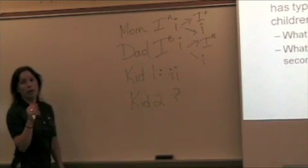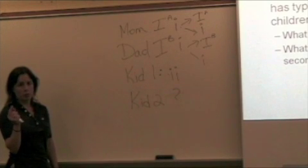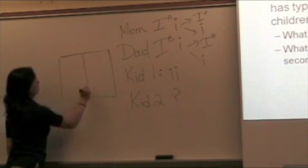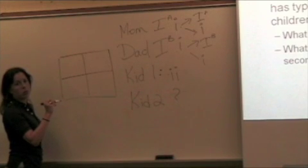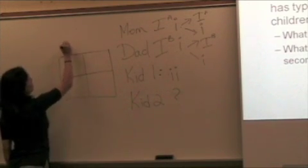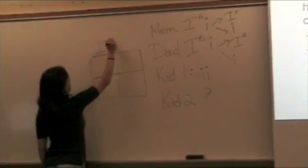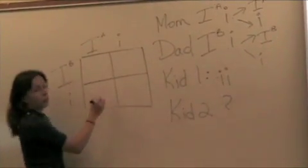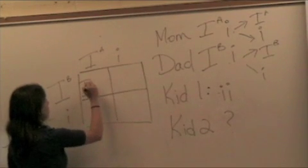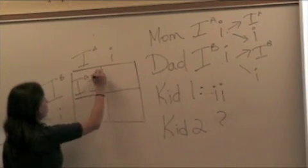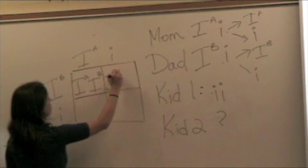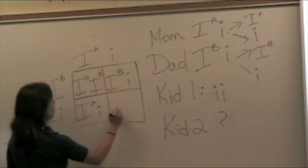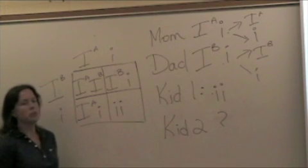This is going to be a monohybrid Punnett square. You will only have to do monohybrid Punnett squares for the codominance and the blood type. I'm going to put the mom on the top and the dad on the side. I'm going to fertilize in the boxes, joining the gametes.